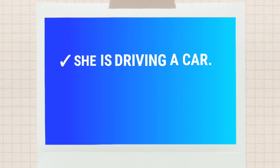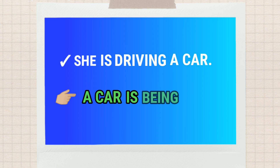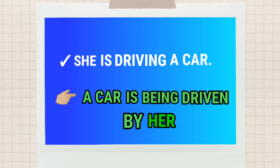Another example: 'She is driving a car.' To change this sentence, write 'A car is', then 'being', then 'driven', then 'by her.' We use 'driven' because you have to use the past participle form — drive, drove, driven. So the result is: 'A car is being driven by her.' Always remember: in active to passive, bring the object first, then the auxiliary verb, then the rest.